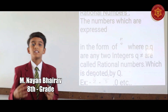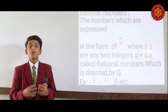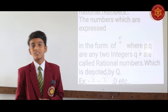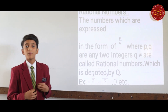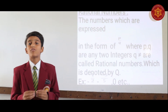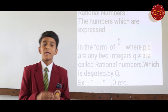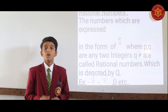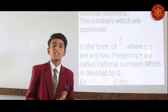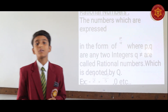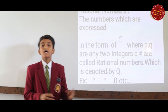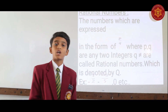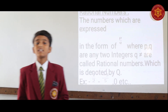Good morning, everyone. My name is Nayan Biro from Kagathia Olympiad School. Today, I would like to explain the definition of rational numbers. What are rational numbers? Rational numbers are the numbers which are represented in the form of P by Q, where P and Q are integers and Q is not equal to 0. These numbers are also known as quotient numbers and represented by capital Q. For example, 8/17, 3/7, 8/6, 0, etc. are rational numbers.